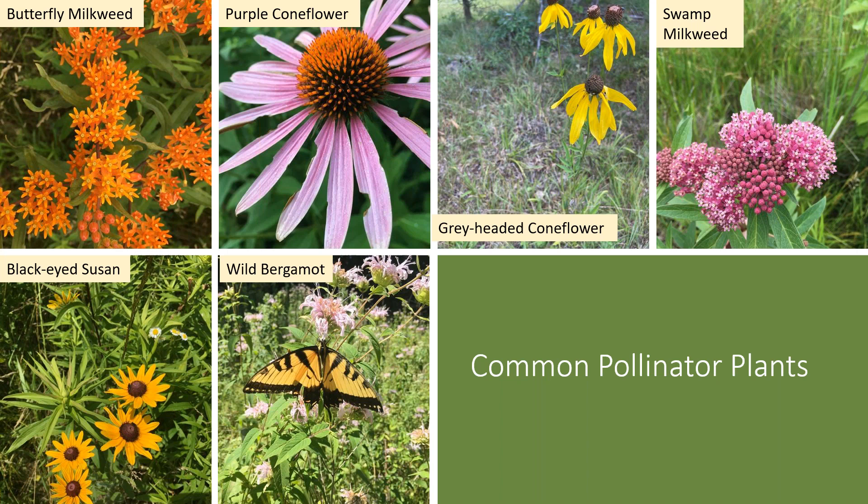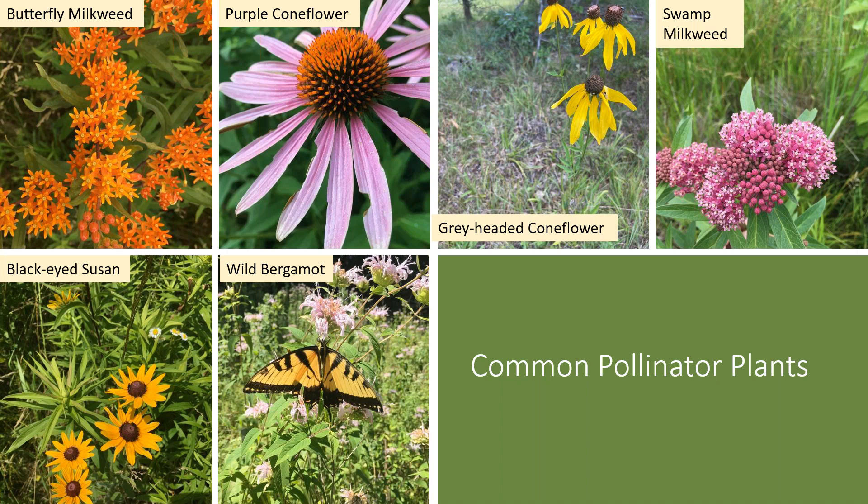Common pollinator plants included in a pollinator mix usually include one of the milkweeds — butterfly milkweed or swamp milkweed, with swamp milkweed doing better in wetter areas. Purple coneflower is usually included as a great pop of color and fan favorite. Gray-headed coneflower and black-eyed susan are also usually included because they provide food for pollinators and in fall and winter their seeds provide food — goldfinches absolutely love to eat seeds from coneflowers and black-eyed susans. Wild bergamot is a favorite for pollinator mixes as it really attracts butterflies and bees.